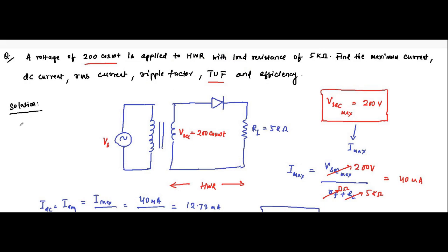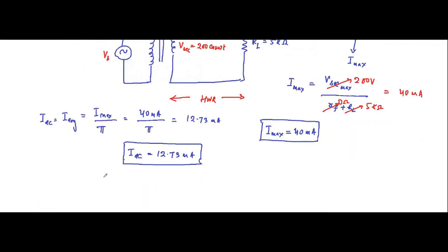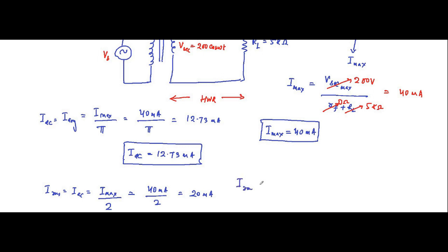Next, the RMS value. Always remember: I_RMS equals the peak value of current divided by 2. That is equal to 40 milliampere divided by 2, which equals 20 milliampere. So I_RMS is equal to 20 milliampere.